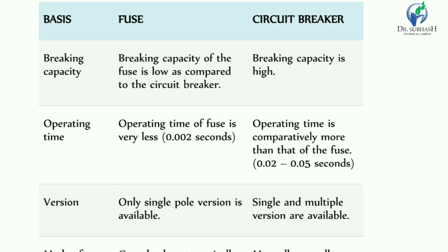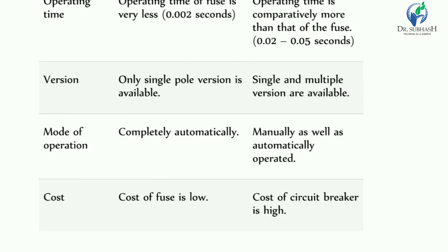The breaking capacity of a fuse is low as compared to a circuit breaker; the breaking capacity of a circuit breaker is higher. The operating time of a fuse is very low — 0.002 seconds — whereas the circuit breaker operating time is 0.002 to 0.05 seconds. Regarding poles: the fuse is only single pole, while the circuit breaker is available in single pole, double pole, and multiple pole versions. The mode of operation of a fuse is completely automatic, while the circuit breaker can operate both manually and automatically.